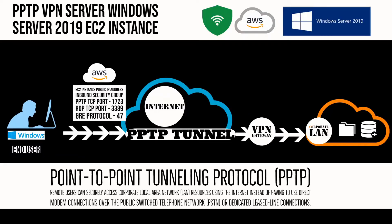In this tutorial I will demonstrate step-by-step configuration and installation of a Virtual Private Network server on Windows Server 2019 EC2 instance. The protocol I'm using today is Point-to-Point Tunneling Protocol, which allows remote users to securely access corporate local area network resources using the internet.